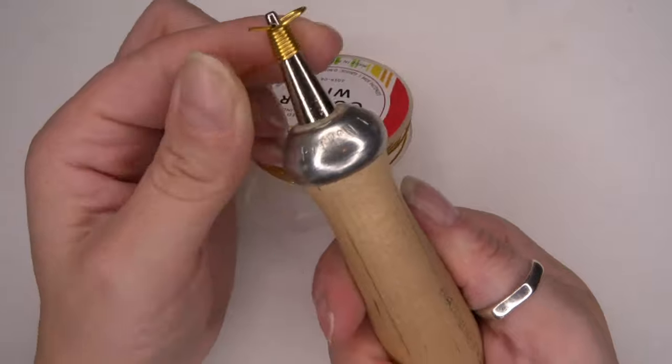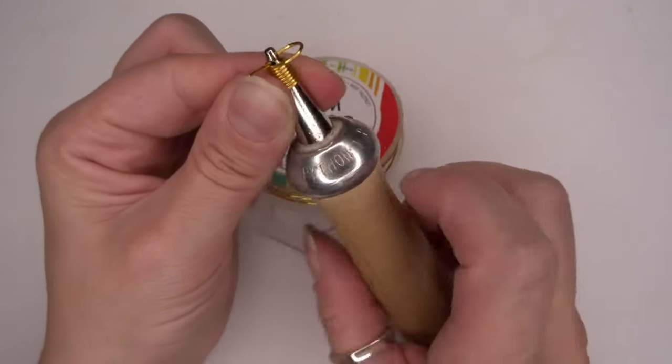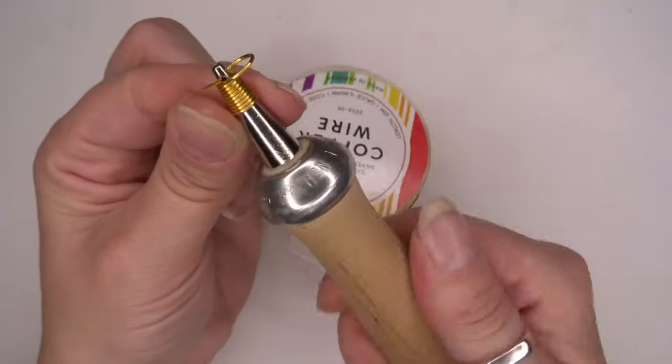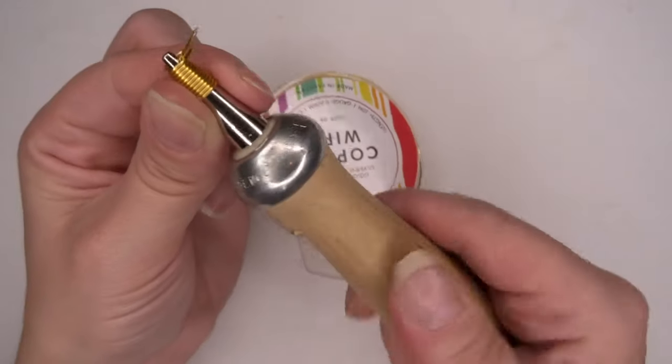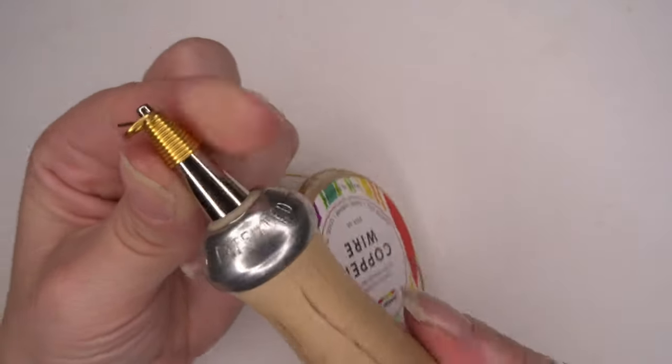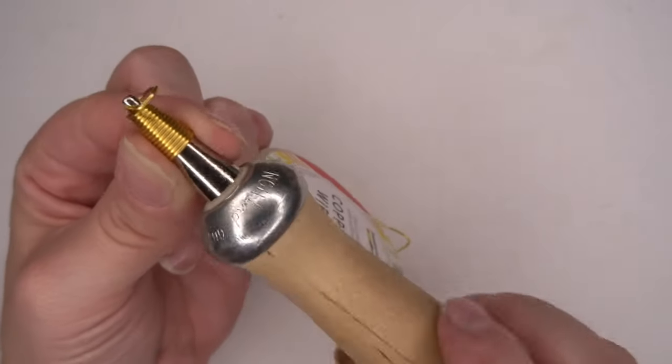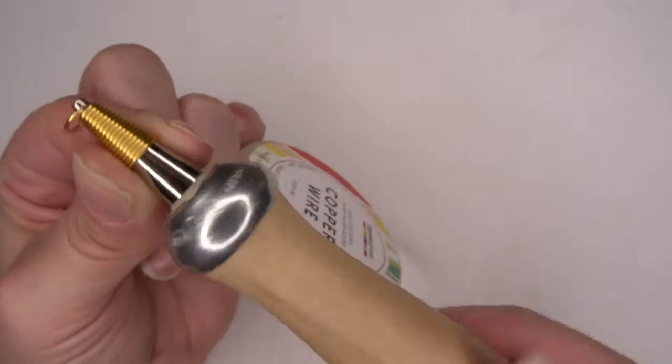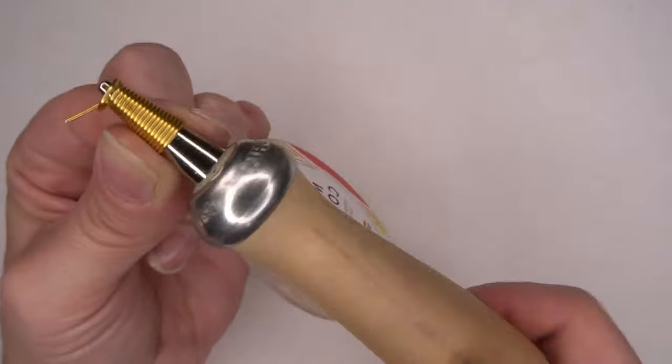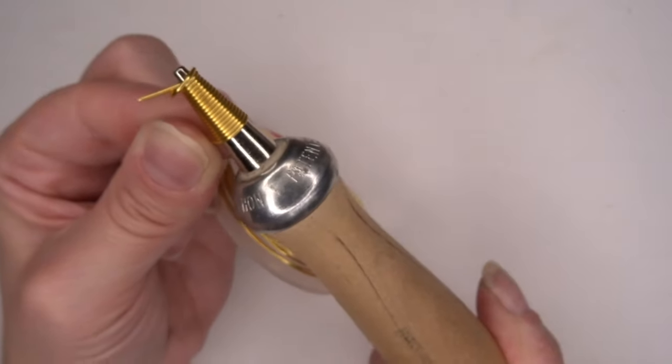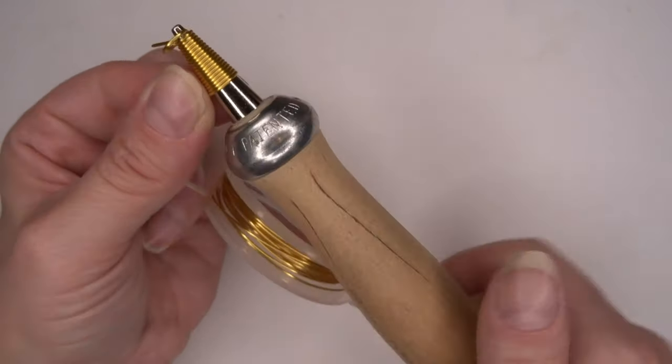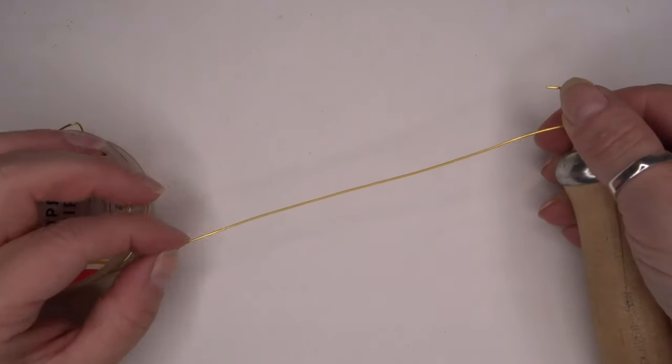We're just going to keep on going until we hit probably about halfway. So now we're at halfway, and I'm going to leave quite a nice length to help us create our loops. I'm just going to cut there like so.